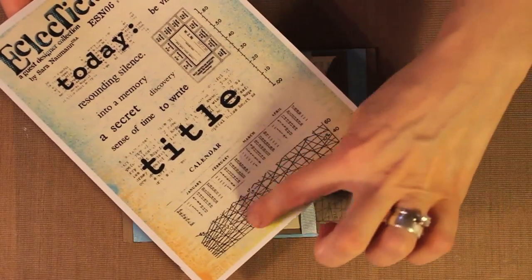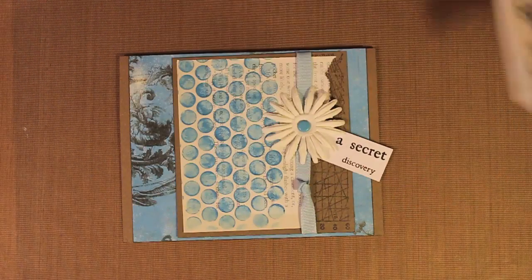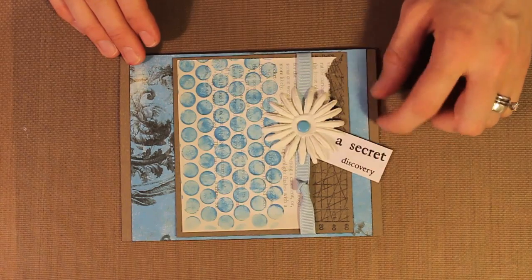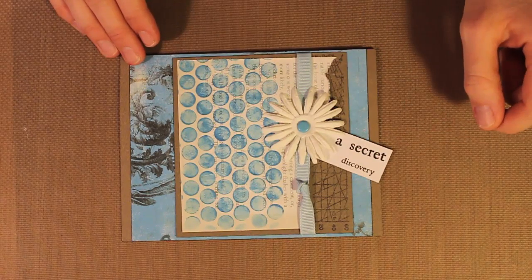and it's this pattern down here. So that border has been stamped going along there. I also used the same stamp set for A Secret Discovery, so just to tuck that underneath the flower.